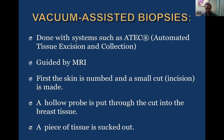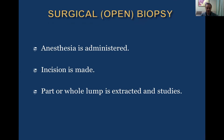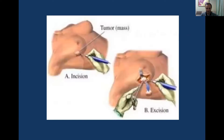Vacuum-assisted biopsies are done with a system guided by MRI. First, we cut the skin, a hollow probe is put through this cut into the breast tissue, and then a part of the tumor is sucked out. Surgical open biopsy involves local anesthesia of the skin and underlying tissues. We make an incision and remove part of the tumor — an incisional biopsy of a superficial part of the tumor for histological and immunohistochemical examination.